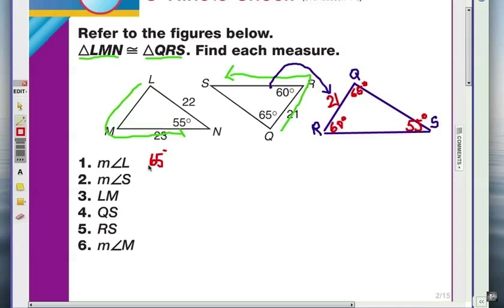Number 2, angle S, well, that's got to be 55 to match angle N right here, 55. LM, well, LM is right here, and notice that that's 21 to match RQ or QR, okay? It's got to be 21.